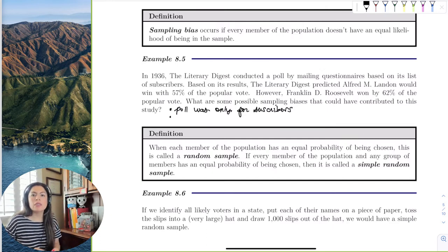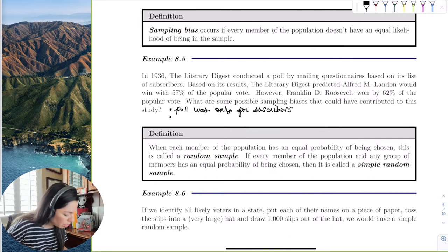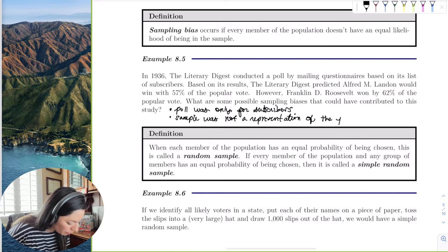So they were actually doing sample bias. It wasn't a good representation of all voters that were voting, apparently, right? So one of the biases we would say is that the poll was only for subscribers. What are some other things? Well, like I said, the sample they selected was not a good representation of the population of voters.